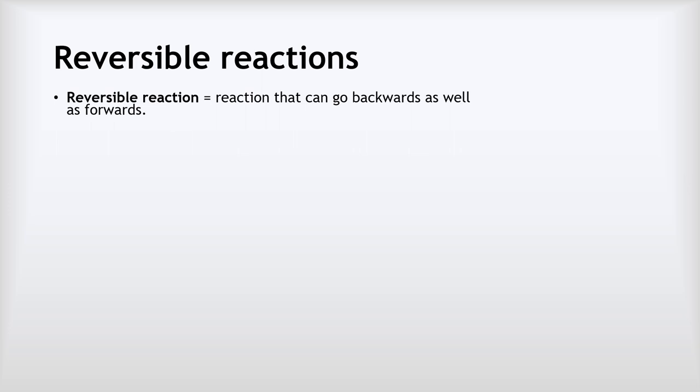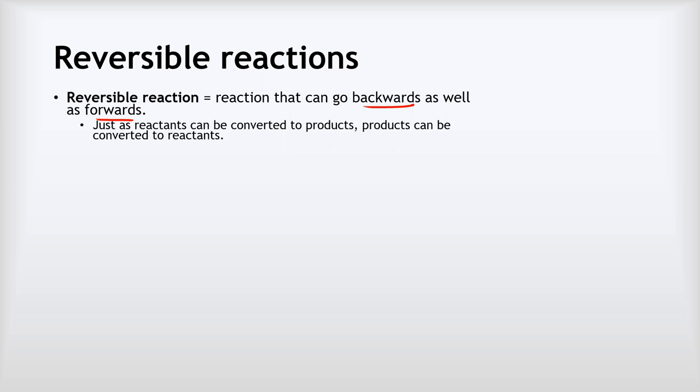So what are reversible reactions? A reversible reaction is a reaction that can go backwards as well as forwards. What that means is that in the same way that the reactants can be converted into products, some of the products can be converted back into reactants. The reaction can be reversed.